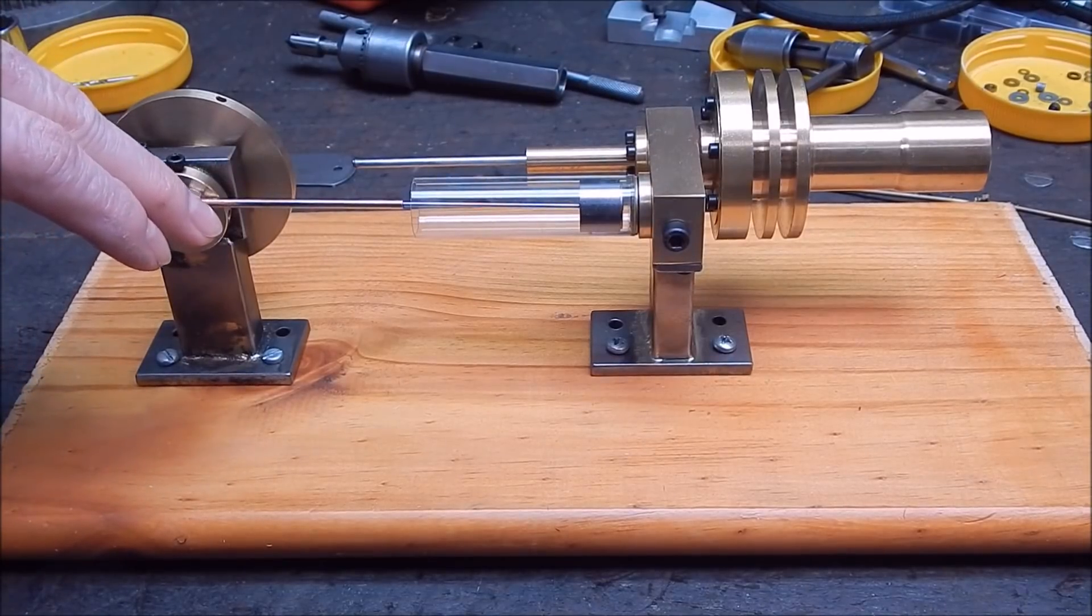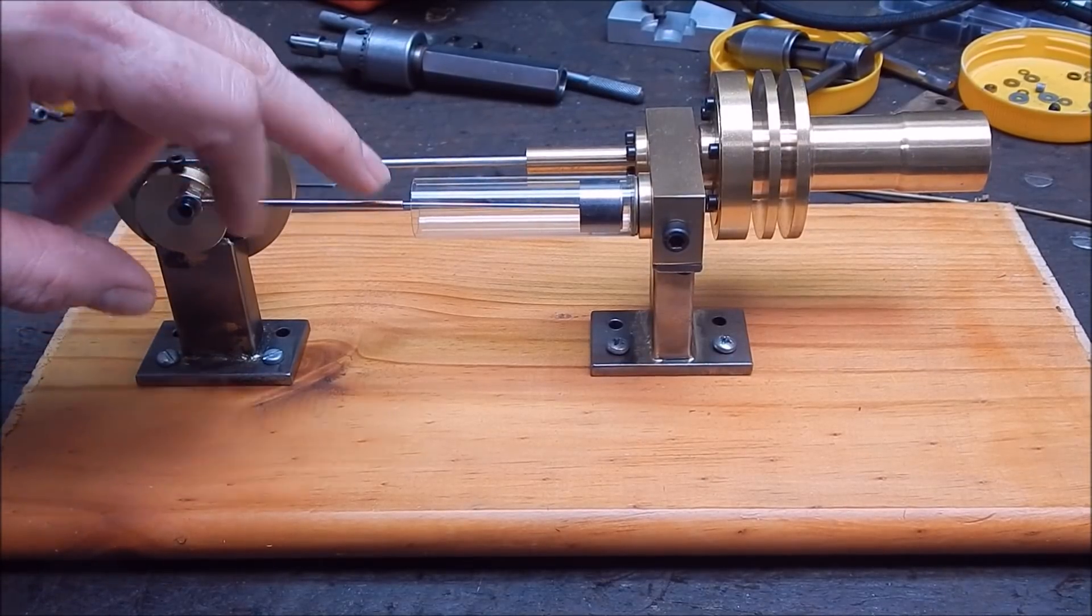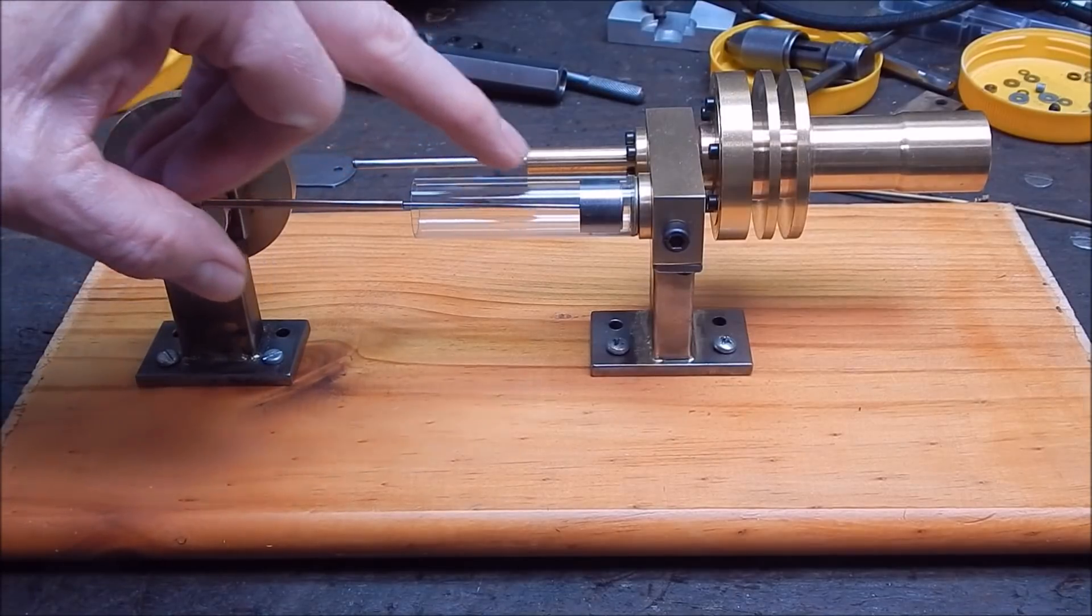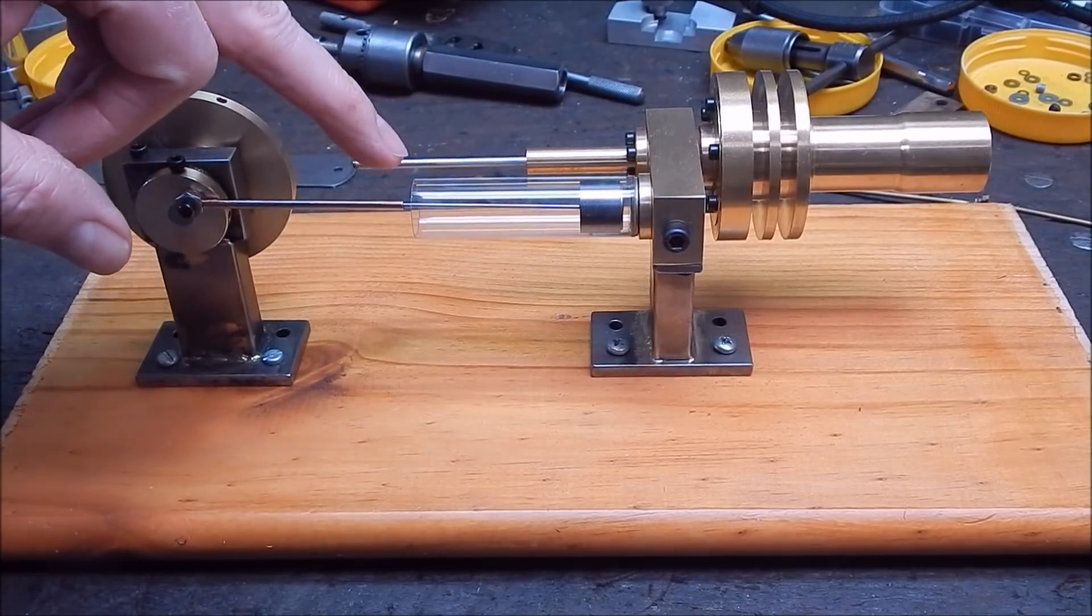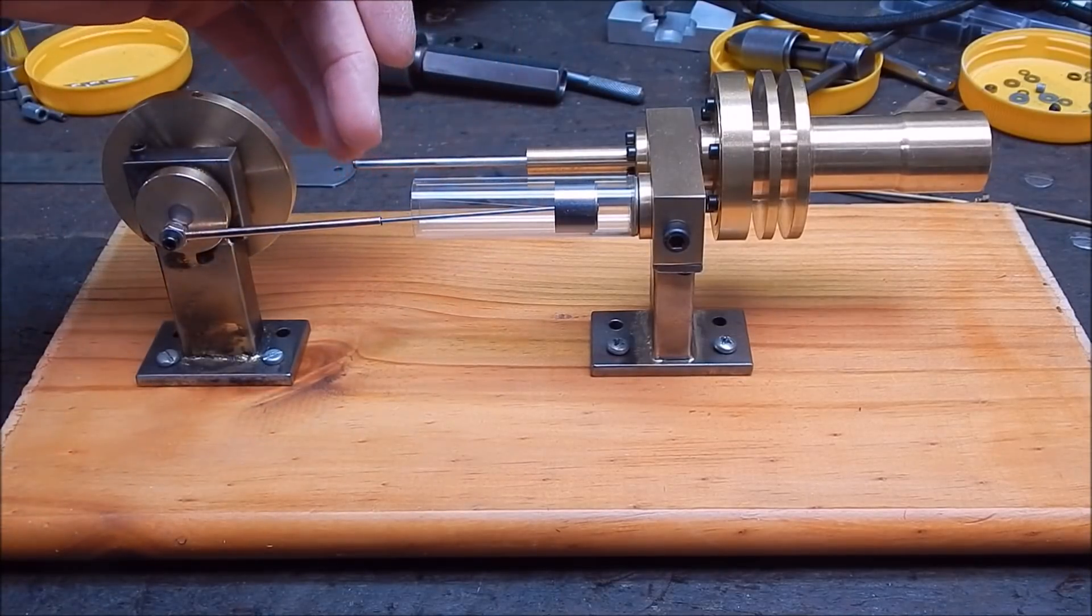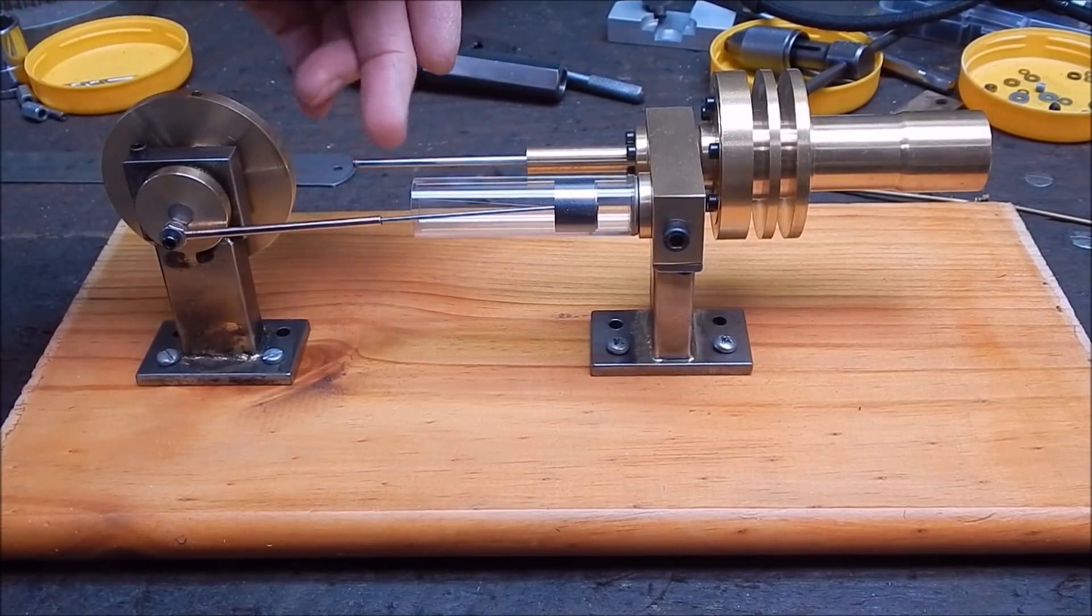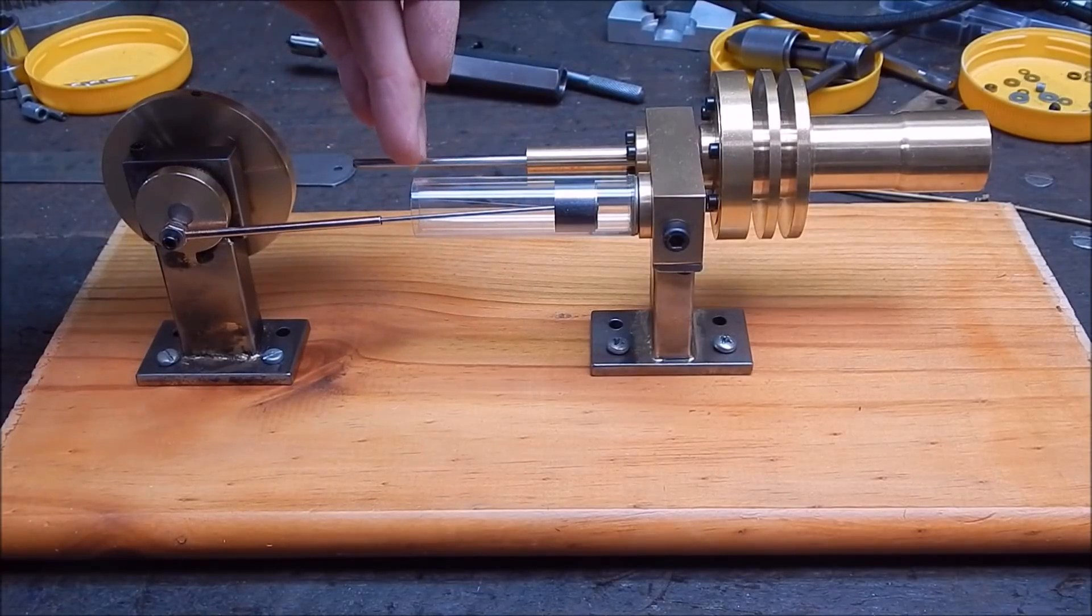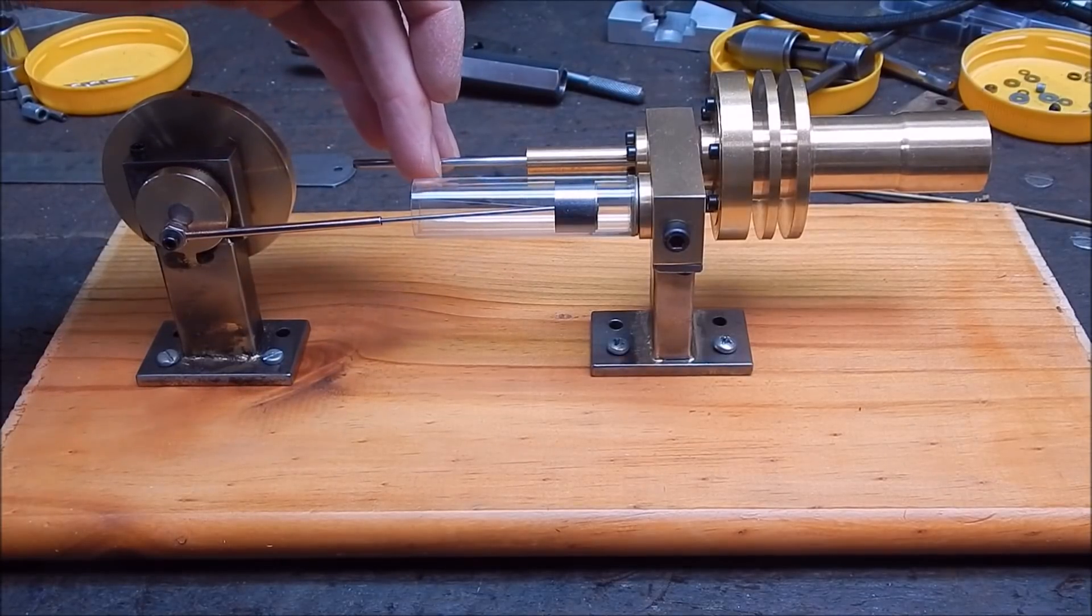I brazed that up, bronze brazed that up yesterday, TIG welded that to the stainless rod, and now it's just a matter of getting onto the displacer. I have to make a link rod up and a knuckle, so I'm going to make the knuckle up this morning out of some brass.